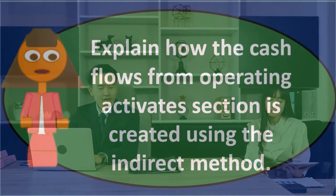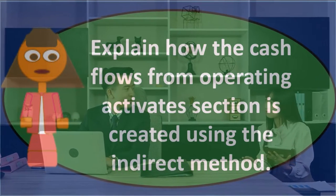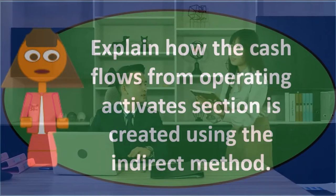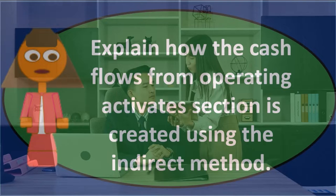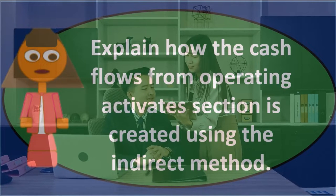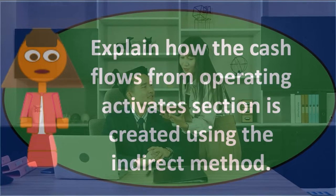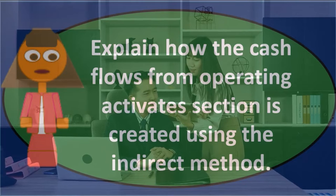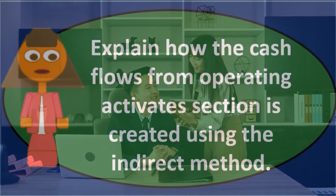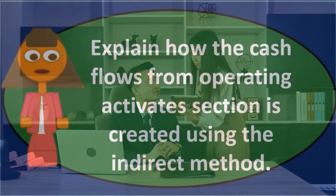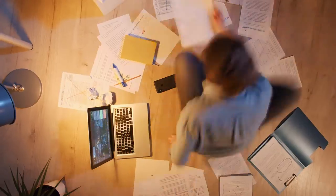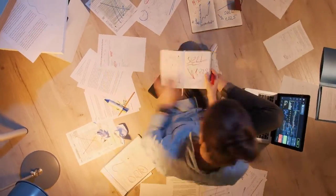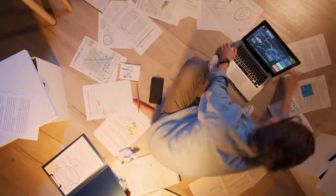The cash flows from operations is similar to the income statement — it shows those activities and gets to a bottom line. On the income statement that's net income; on the statement of cash flows we get cash provided by operations, which is kind of like net income on a cash basis. There are two methods to do that, and operating activities is the major of the three sections with the most detail and line items.